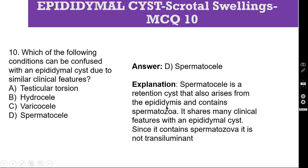Spermatocele is a retention cyst that also arises from the epididymis and contains spermatozoa, due to obstruction of the vas deferens. It is very common after vasectomy. Whereas epididymalis is a degeneration cyst, spermatocele shares many clinical features with epididymalis, but it is not transilluminant because it contains spermatozoa.